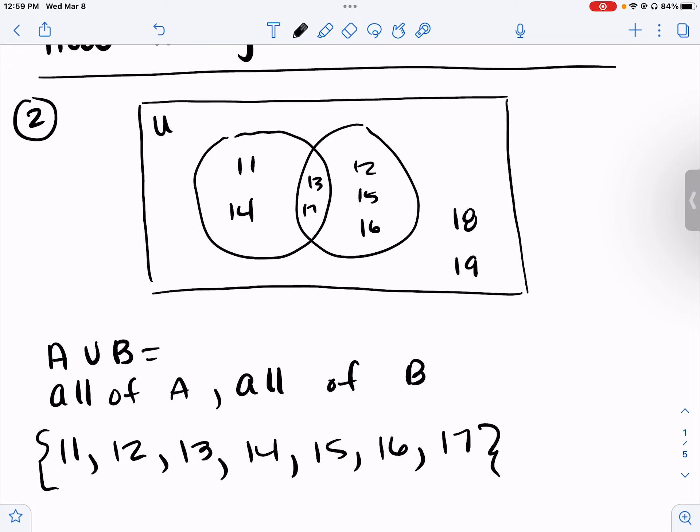Everything that's in A, I forgot to label. Everything in A and write everything in B. Okay, so in A we have 11 and 14, and 12, 15, 16 in B, and we also have 13 and 17 in the middle which are in both of them.